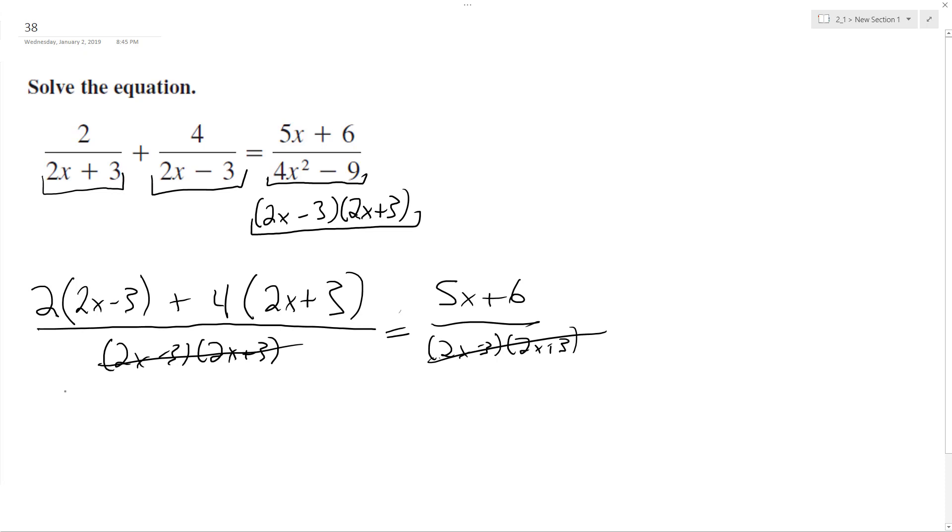Now it's time to solve. So we'll have 4x minus 6 plus 8x plus 12 equals 5x plus 6. Combine like terms, 12x plus 6 equals 5x plus 6.